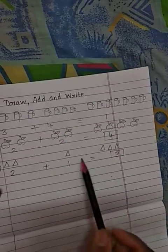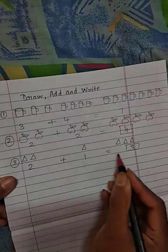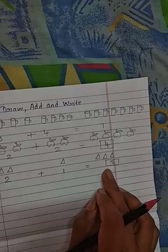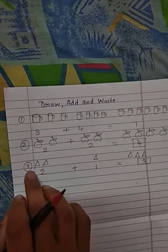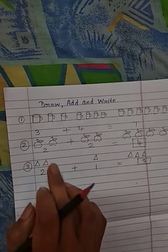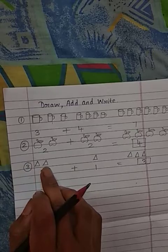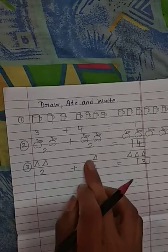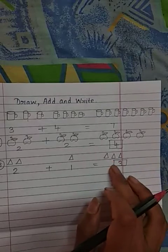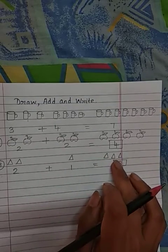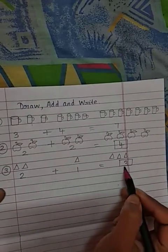But here you need to draw by yourself. I will only give the question, 2 plus 1 equals in a missing box. Whatever object you want, you can draw here. So let's say I have drawn here a triangle. So 2 means 2 triangles you need to draw plus 1, 1 triangle. Total 3 triangles you should draw here and write the answer, 1, 2, 3. That is draw then add and write.